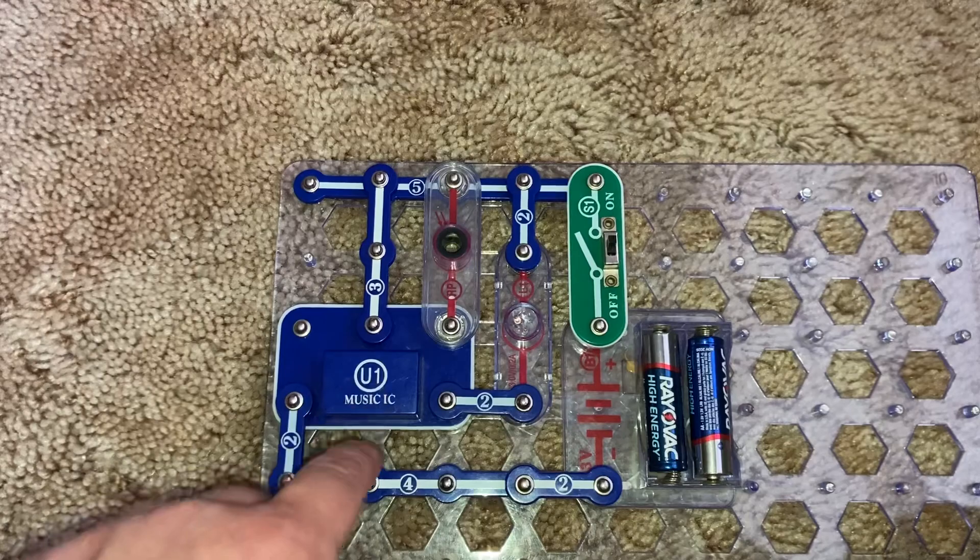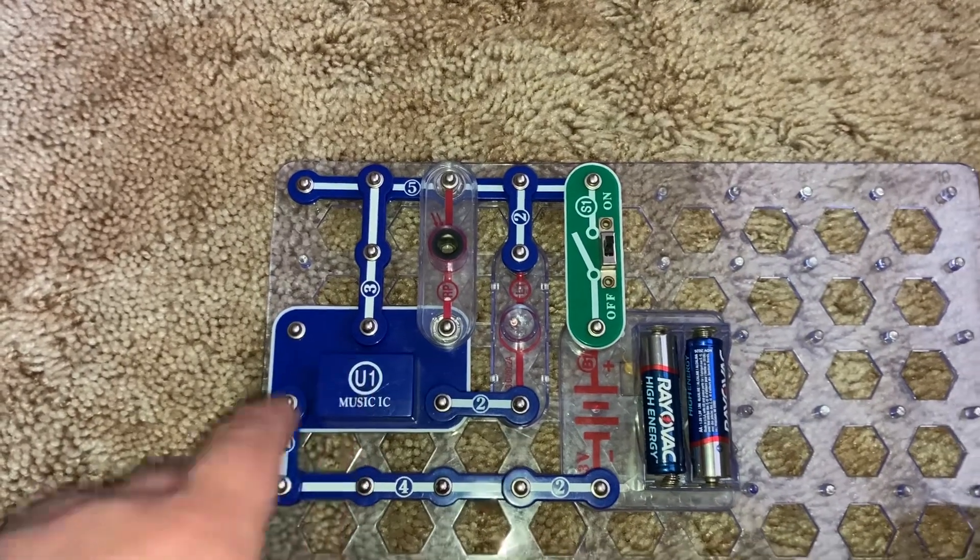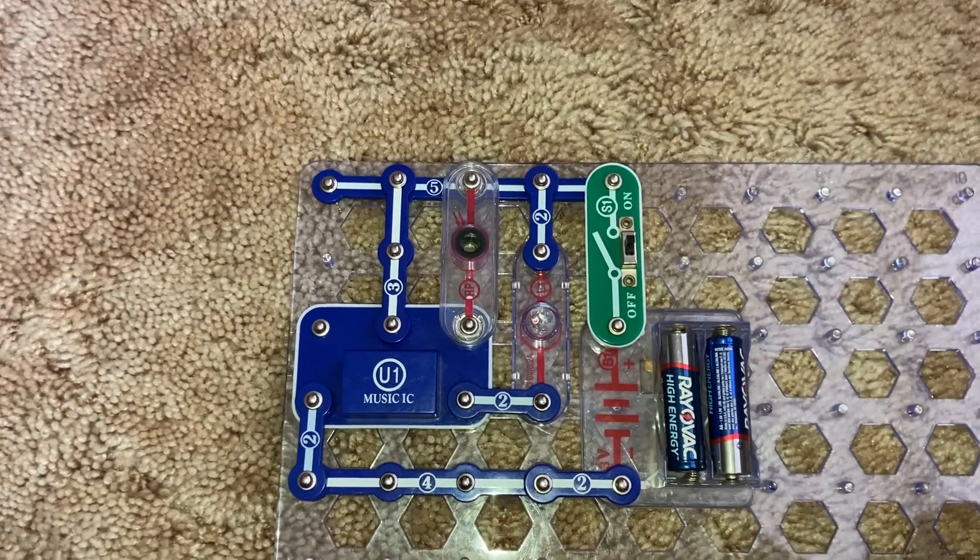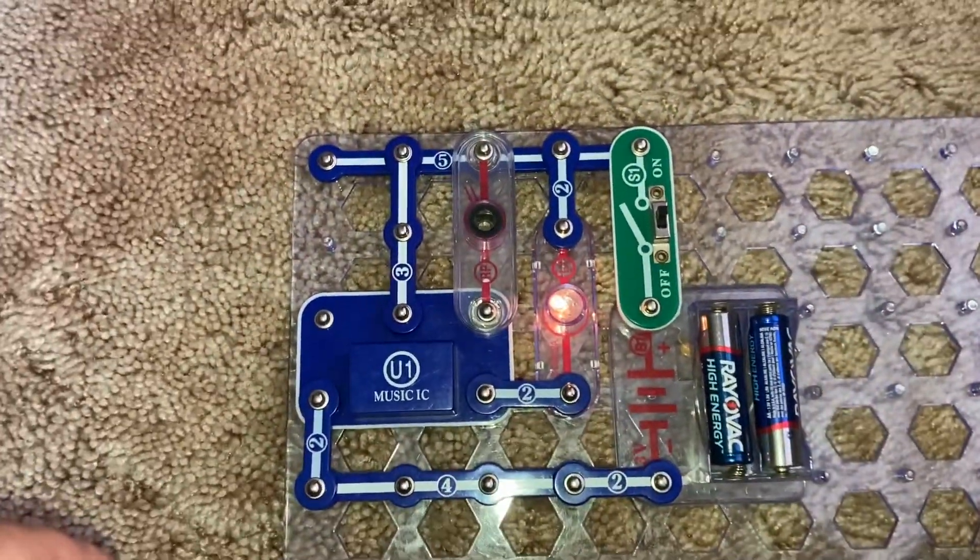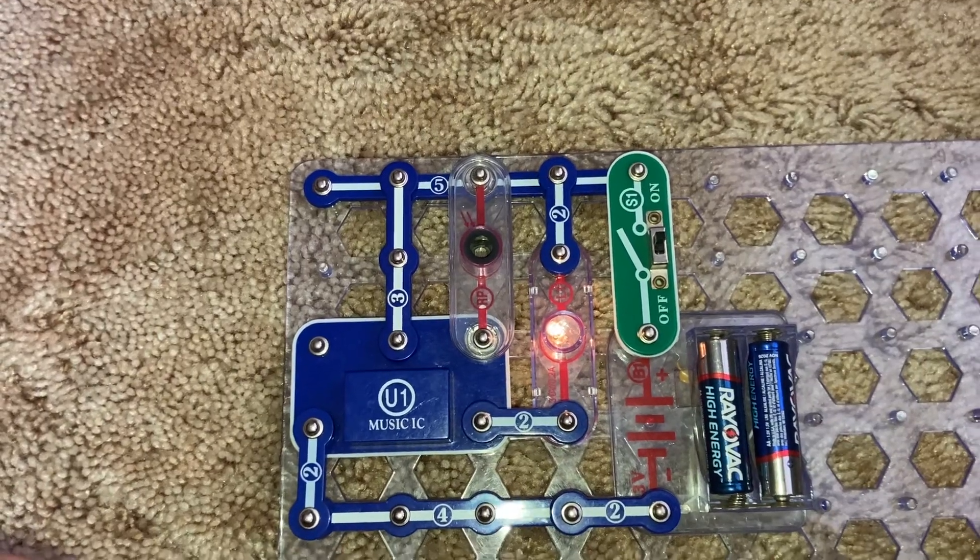Now, because it's attached to the music integrated circuit, the lamp will go off after a short while. And then you can reset it by shining a light back on the photoresistor.